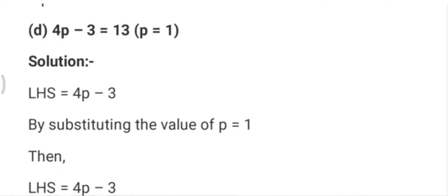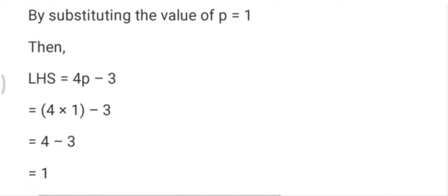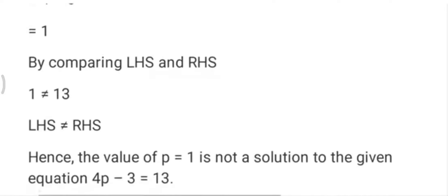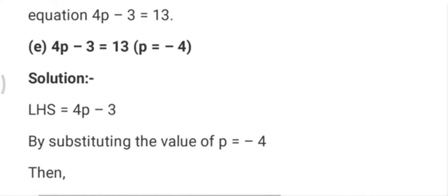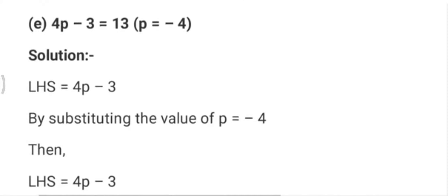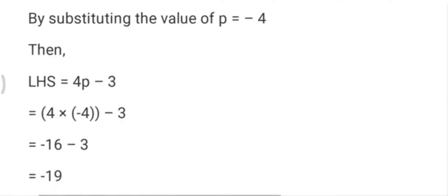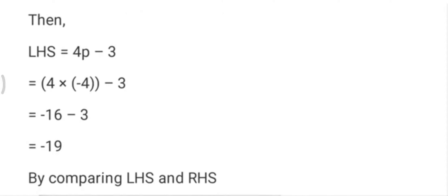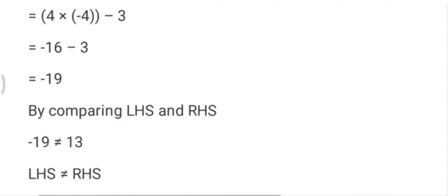In part d, we put p=1. The equation is 4p-3=13, so 4 into 1 is 4, minus 3 is 1, but we need 13, so it is not the solution. In part e, we put p=-4, so 4 into -4 minus 3 gives -16-3 which equals -19, also not the solution.